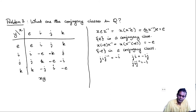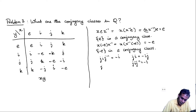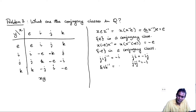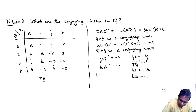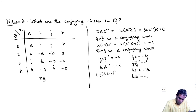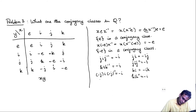What about k·i·k⁻¹? By the same reasoning, k·i = -i·k, so k·i·k⁻¹ = -i. And if instead of j you take -j: (-j)·i·(-j)⁻¹ — since -j = -(j) and (-j)⁻¹ = -(j⁻¹) — this is again -i. Similarly, (-k)·i·(-k)⁻¹ = -i. So conjugating i by any element of Q gives either i or -i.